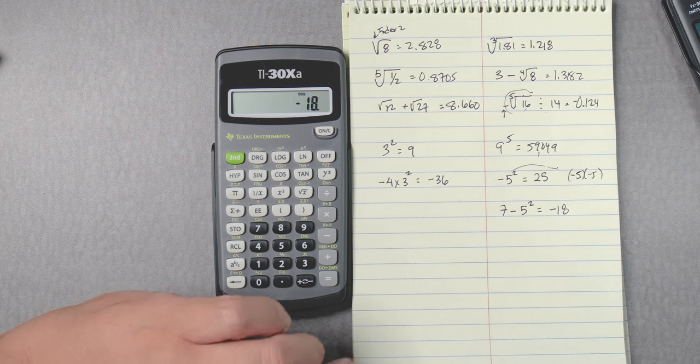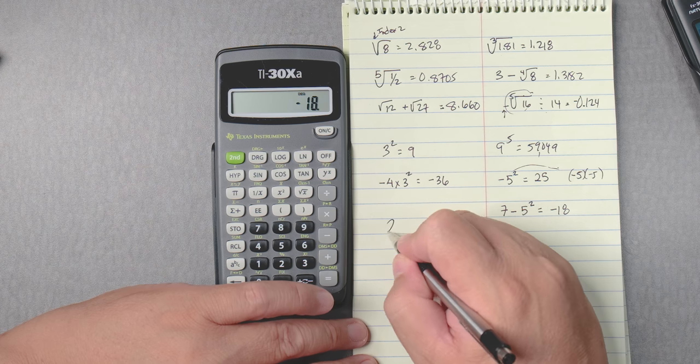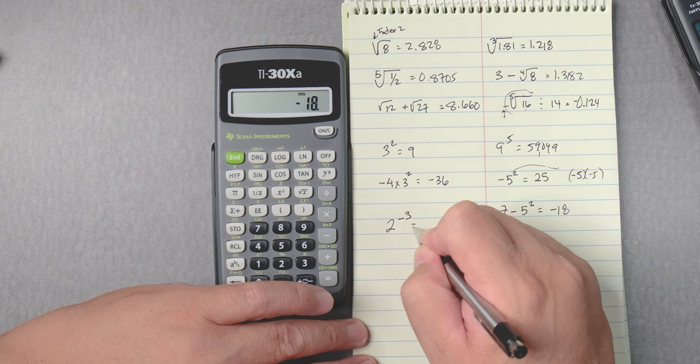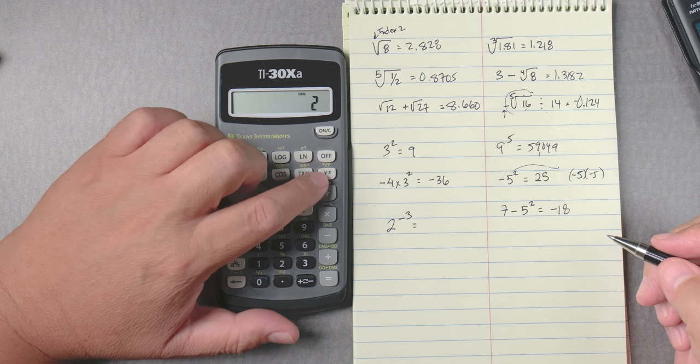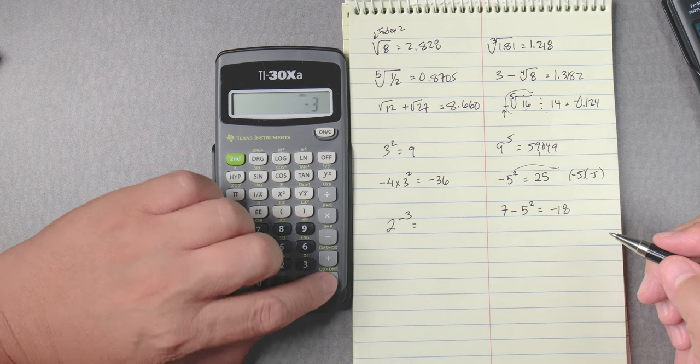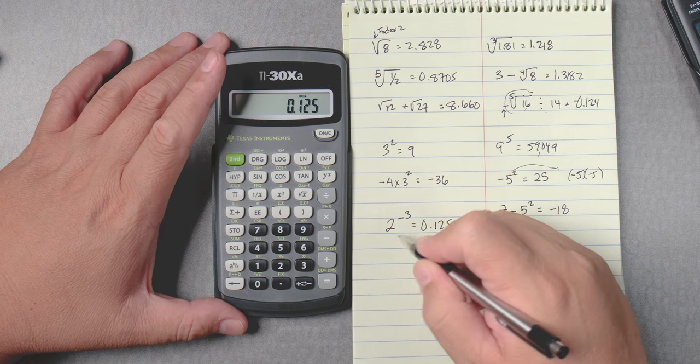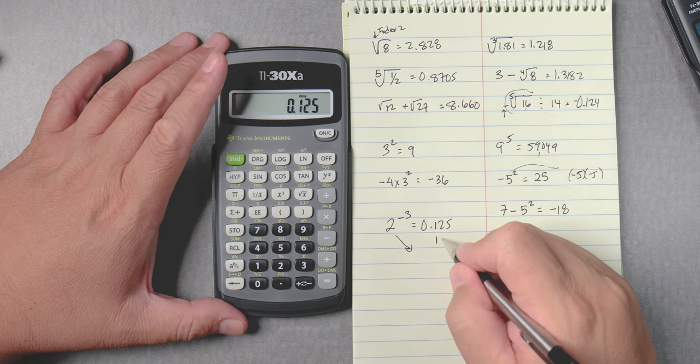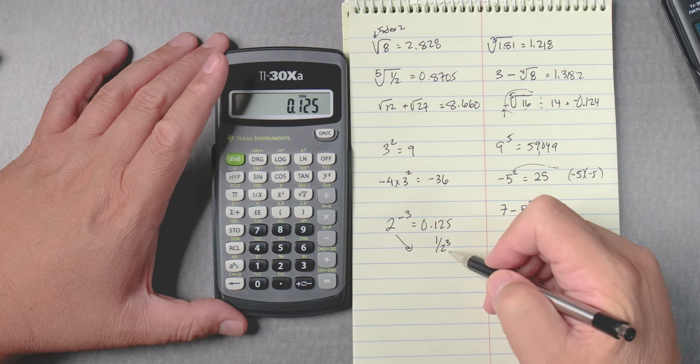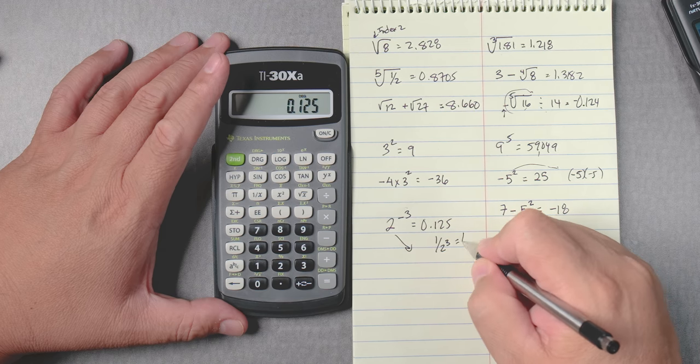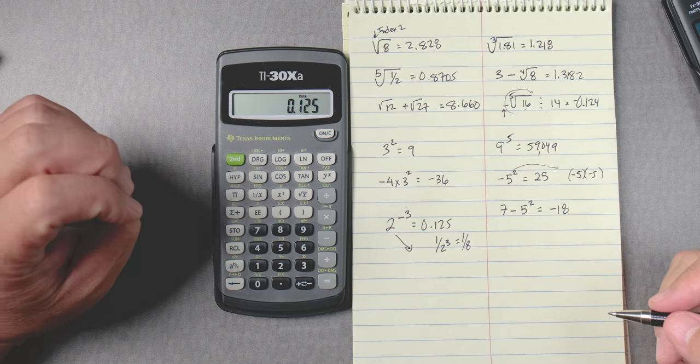Let's say you got 2 to the negative 3. It's going to be 2 y to the x 3 negative equals and that's going to give you 0.125. This negative 3 is going to go below and that's 1 over 8, and 1 divided by 8 is 0.125.